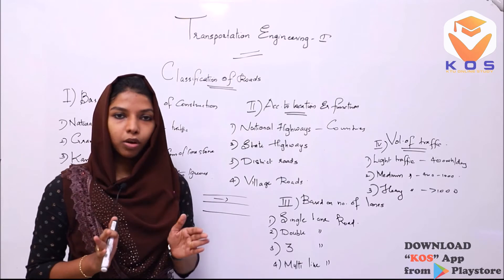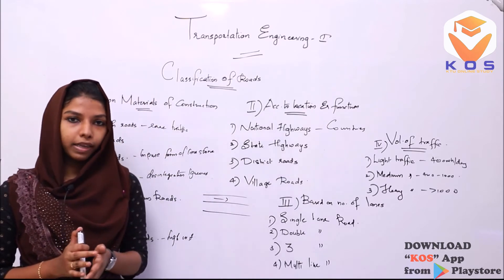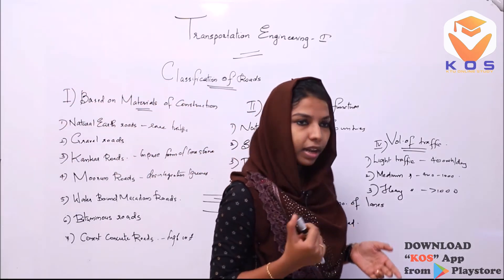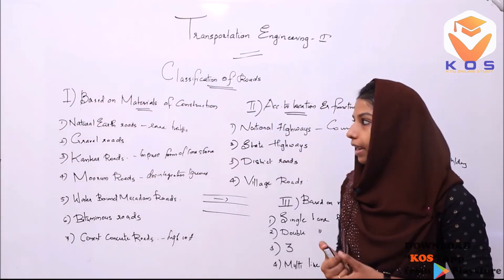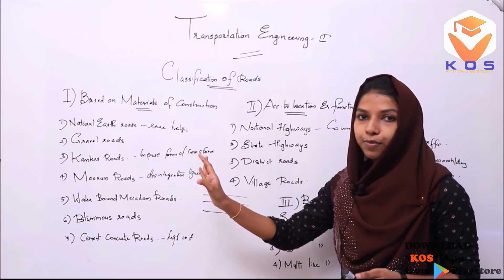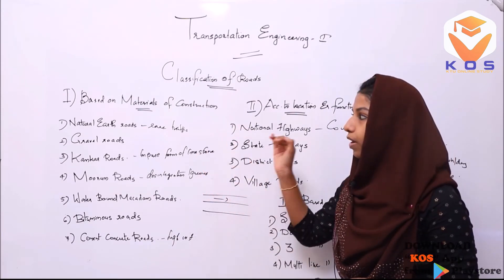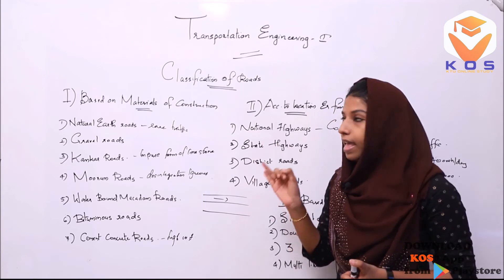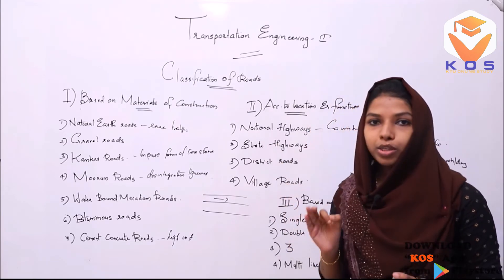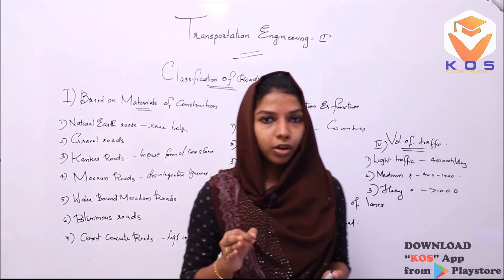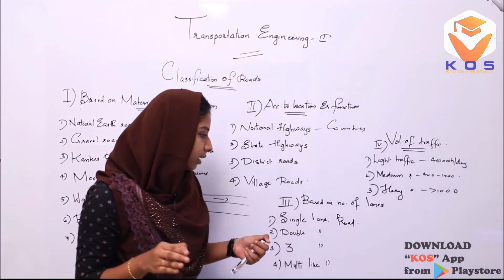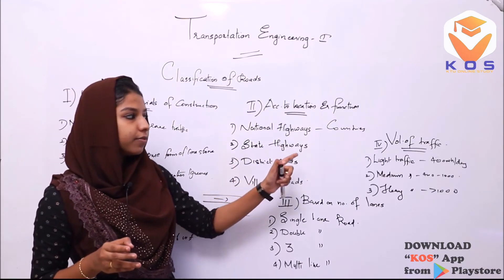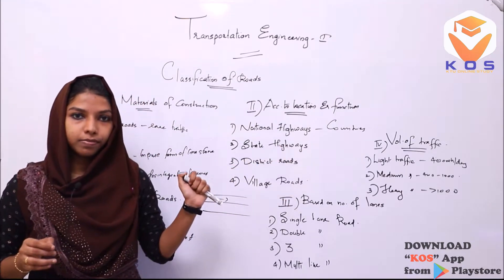So we have learned the classification of roads — a simple but important topic. The 4 main classifications are: first, based on materials of construction; second, according to location and function; third, based on number of lanes; and fourth, volume of traffic.